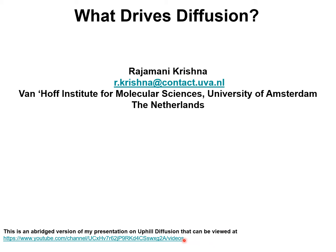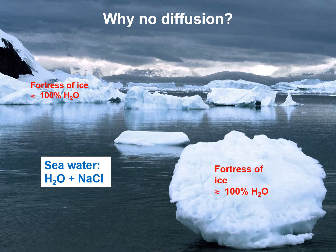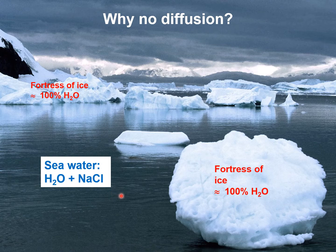We start our journey in Antarctica. Here is a picture taken in Antarctica showing fortresses of ice containing nearly pure H₂O in contact with seawater that contains salt. The question arises: why is there no diffusion of salt from seawater into the ice fortresses?